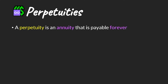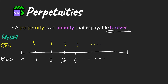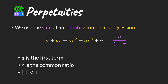A perpetuity is essentially an annuity where cash flows are paid forever — they do not end. If we draw out a timeline, we can see that cash flows are made at all time points. In this case cash flows are paid in arrears, and we can calculate the present value as follows, assuming that we have a positive interest rate.